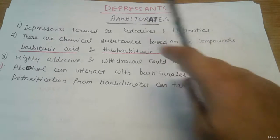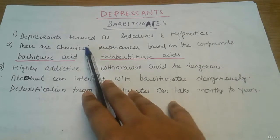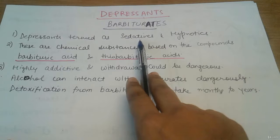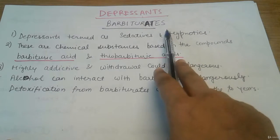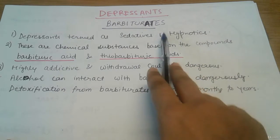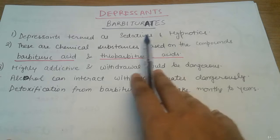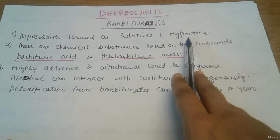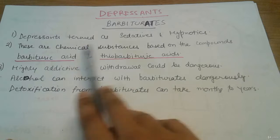What are barbiturates? Barbiturates are depressants termed as sedatives and hypnotics. In smaller doses, barbiturates are known as sedatives, used to produce sedation. When given in larger doses as sleeping pills, they are known as hypnotics. You must know the difference: sedatives are given for sedation, while hypnotics are taken as sleeping pills.